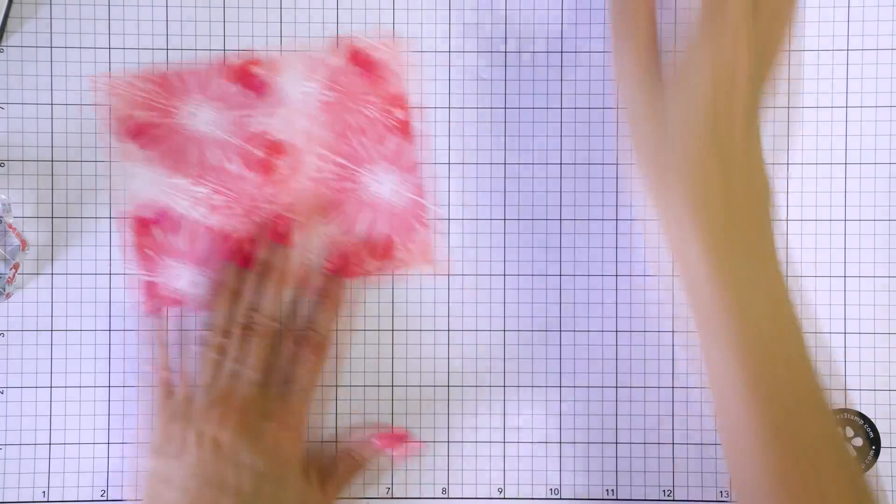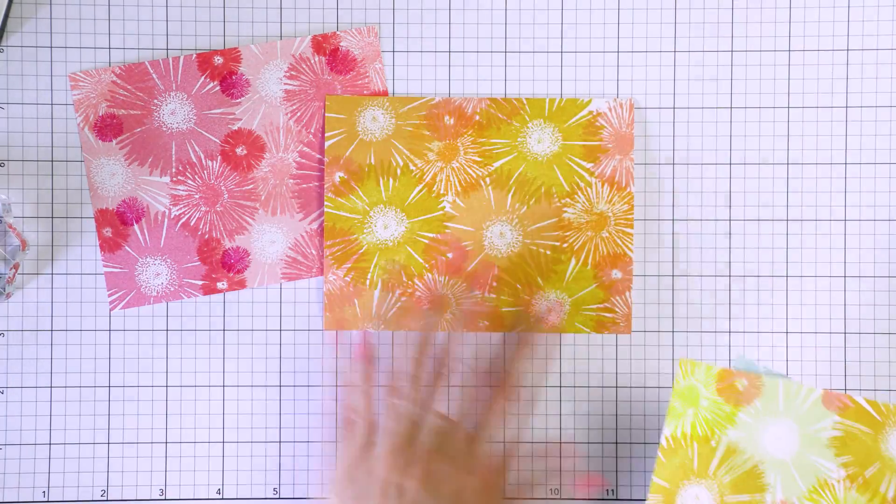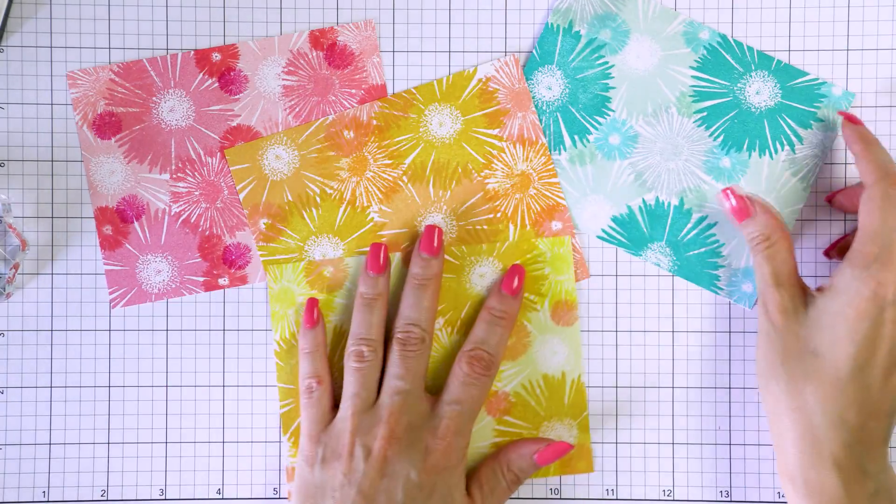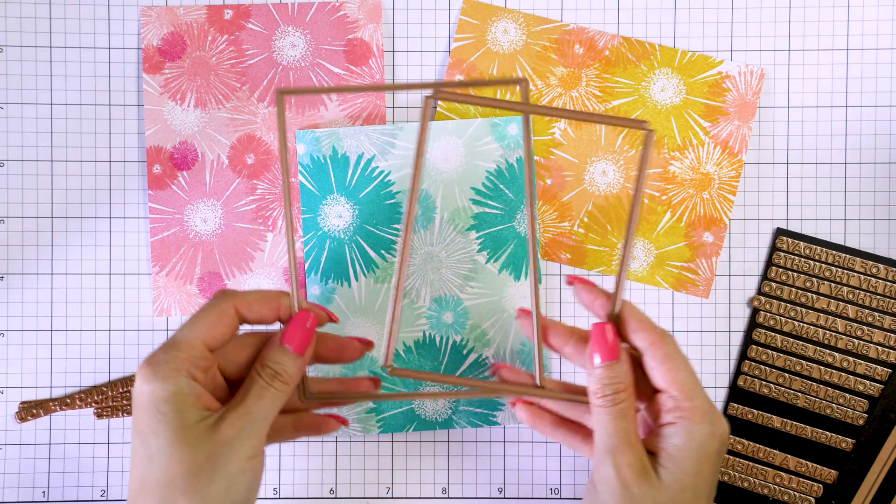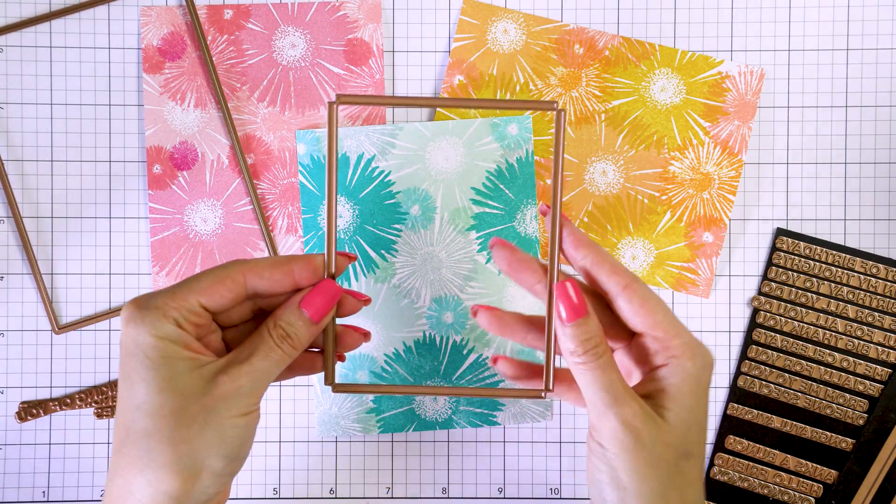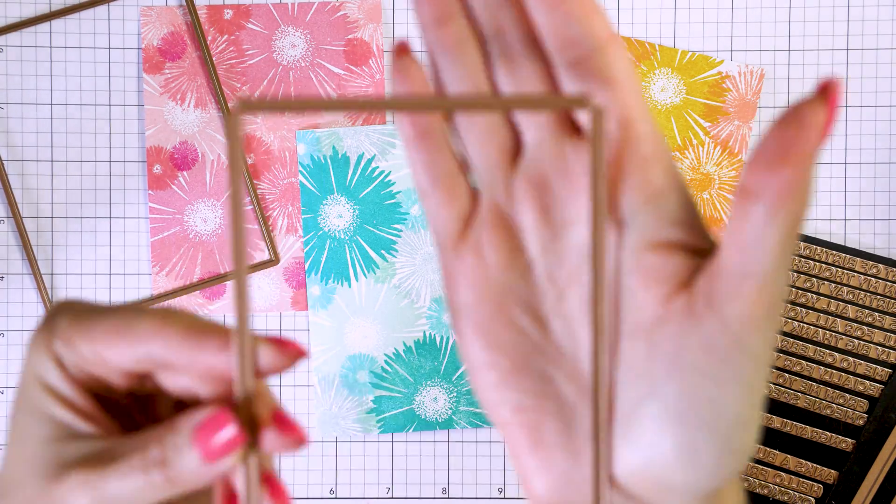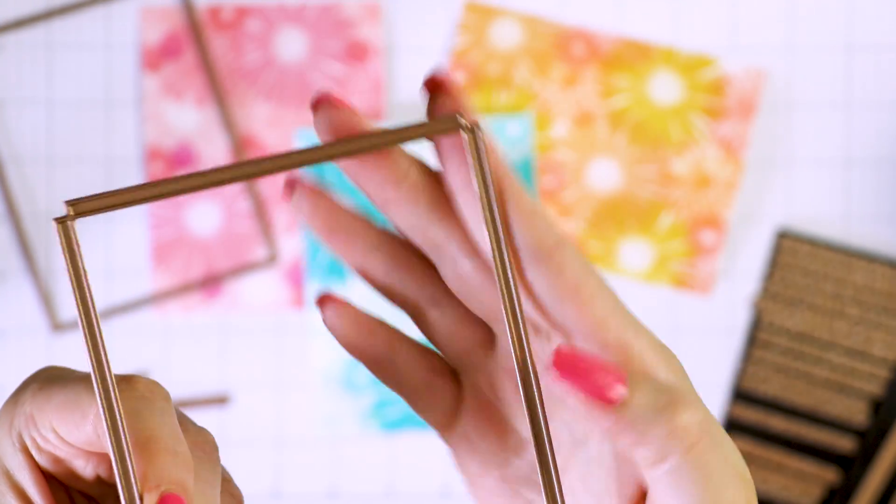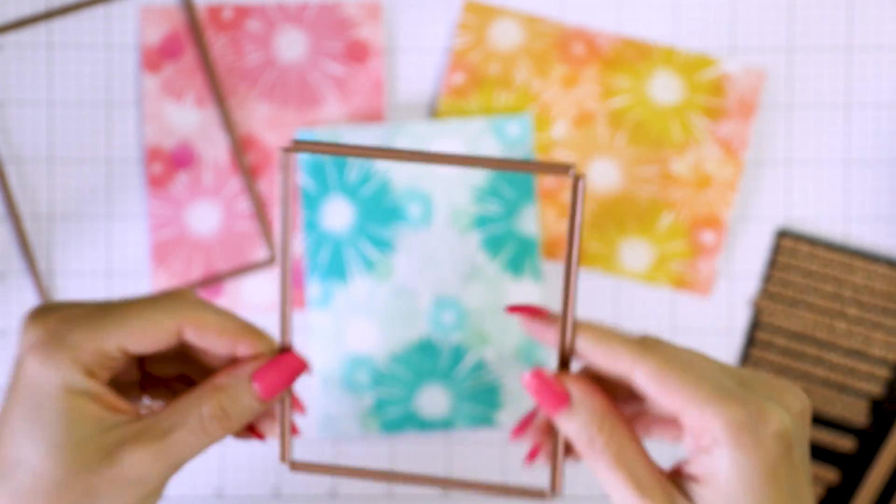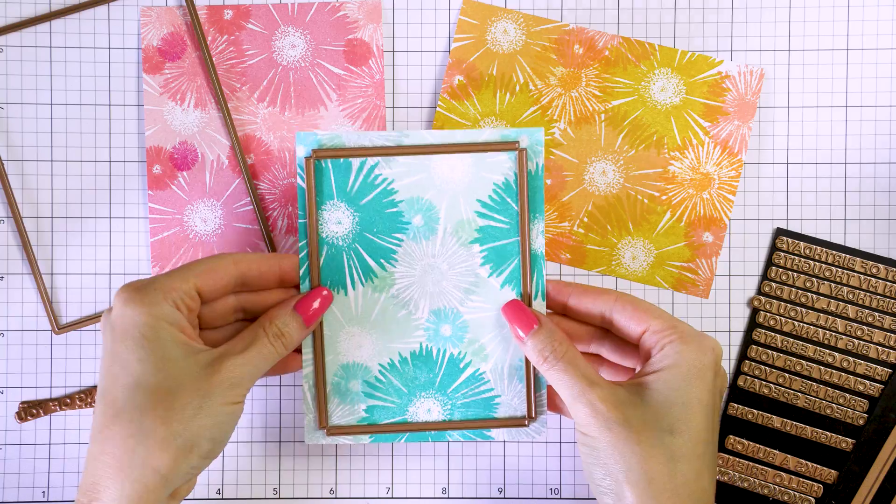Here's a look at the patterns that I have stamped. I did stamp yellow pattern twice as I didn't like the colors on the first pattern. From here you can take your backgrounds anywhere you like. You can stamp on them, you can die cut them, you can heat emboss a sentiment on them, really anything you want to do.